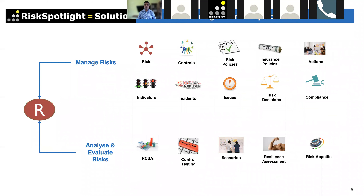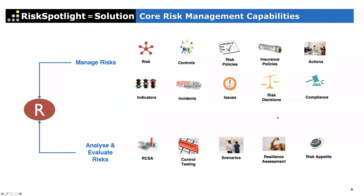Most risk management software — and there are 100-plus out there — provides a library of risks, controls, policies, incidents, issues, and indicators. But when we researched why we can't get buy-in from the first line, it became clear that none of these are important from the first line's day-to-day perspective. First line people don't come to work to manage risks or assess controls — they come to conduct a business process, run a project, or develop an IT system.